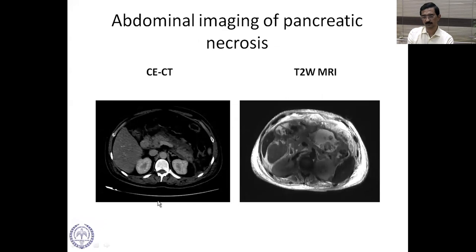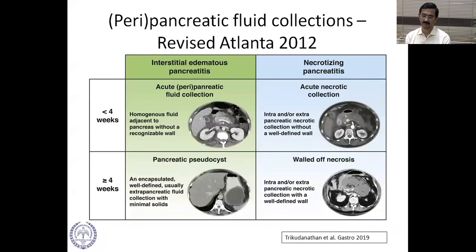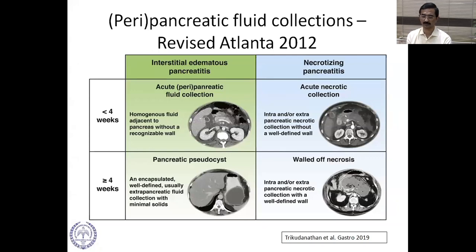CT imaging on the left shows a lot of non-viable tissue, while T2-weighted MRI on the right shows a quite disrupted pancreas with fluid and necrotic material. There are four types of collections that can develop as a consequence of pancreatitis. Collections occurring less than four weeks — acute fluid collection and acute necrotic collection — have no recognizable wall. Those occurring more than four weeks — pancreatic pseudocyst and walled-off necrosis — have a well-defined wall. The right-side collections contain necrotic tissue. Over time, collections become more organized, making them more amenable to intervention.